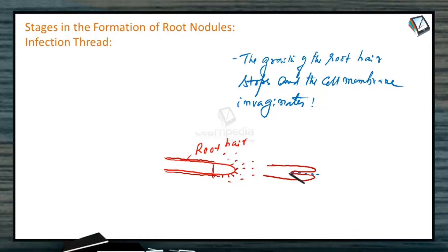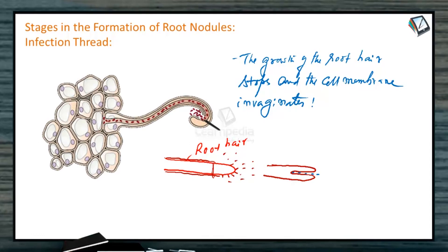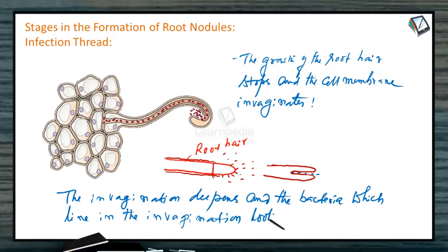Now the bacteria attach to the surface of the cell membrane and causes invagination like this. And the bacteria enter into the invagination. Look at this image. This bacteria after entering into the invagination, the invagination depends on the bacteria which line in the invagination looks like a thread. So this is called infection thread.